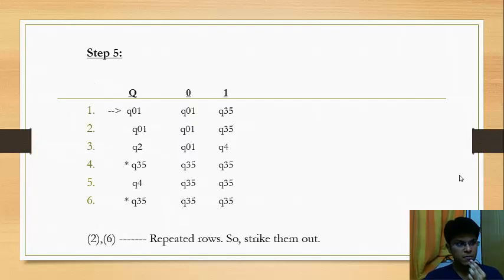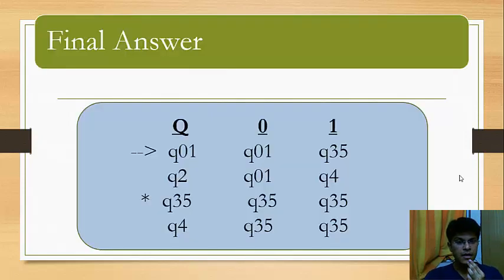After concatenating the states, we mark them according to the respective names in the table again and strike out the repeated rows. Here, you can see that first and second are the repeated rows, so we strike out the second. Similarly, fourth and sixth are the repeated rows, so we strike out the sixth. Now, you can see the rest of the rows are the final answer. Here, Q01 is the initial state and Q35 is the final state.